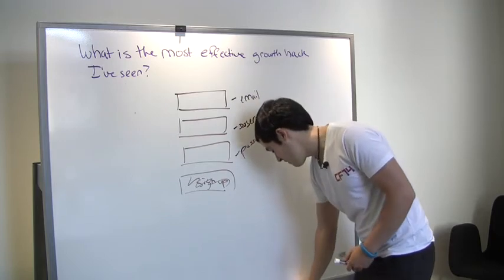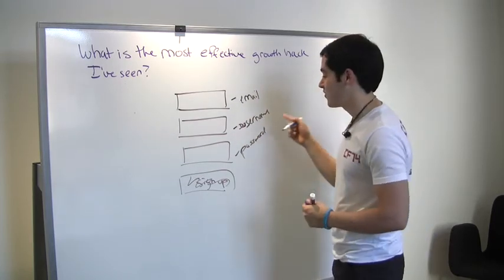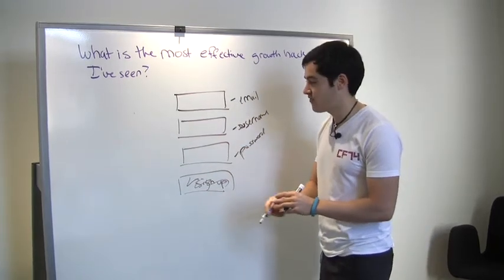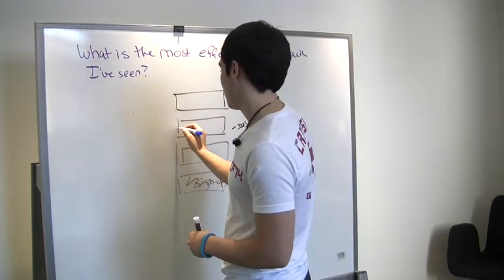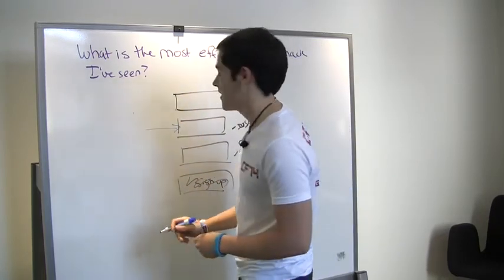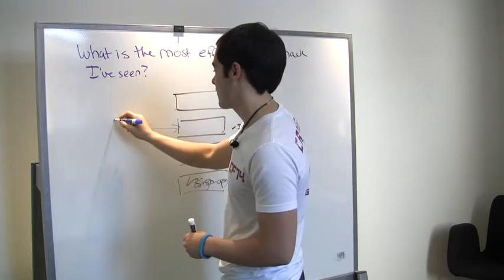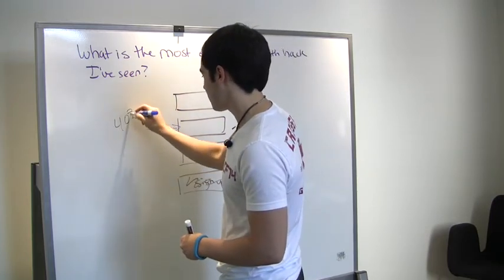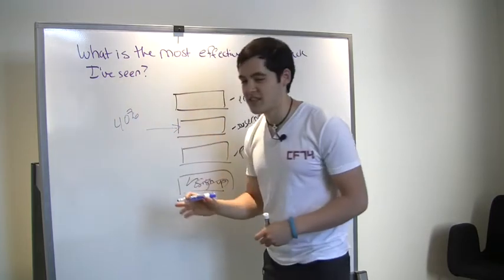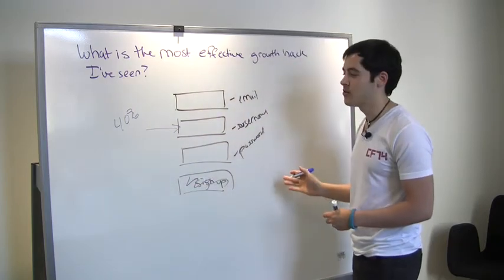What I've seen from people who use username hacks, I've seen, for example, Twitter, when they started recommending usernames, the conversion rate improved 40% on this one form, and it stayed consistent. It was a scalable product method.